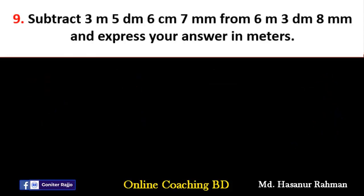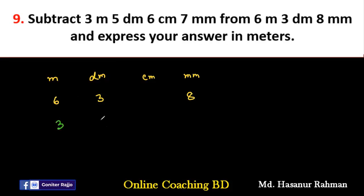Now, number nine. Here, meter, decimeter, centimeter, and millimeter are different units. We write them in columns: meter, decimeter, centimeter, millimeter. The first number is 6 meter 8 millimeter, and we subtract 3 meter 5 decimeter 6 centimeter 7 millimeter from it. We cannot subtract 5 from 0 in the decimeter column, so we take 1 meter from the meter column.